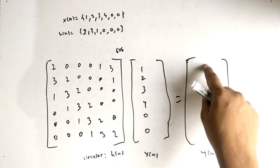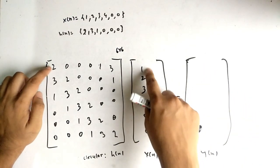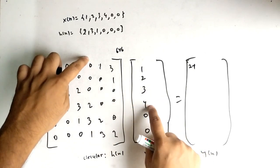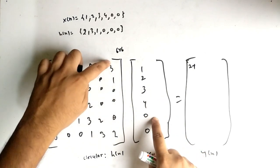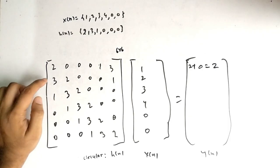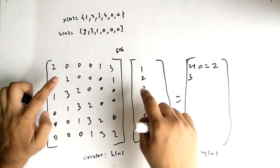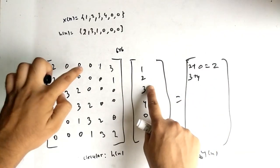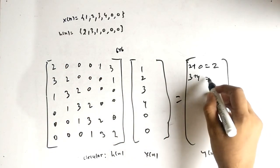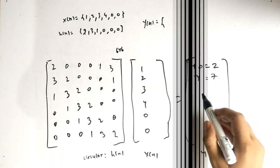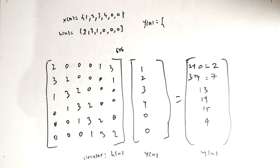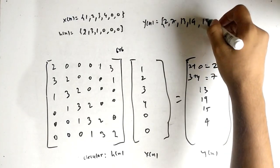Now we multiply the two matrices. For the first value: 2×1 + 0×2 + 0×3 + 0×4 + 1×0 + 3×0 = 2. For the second value: 3×1 + 2×2 + 0×3 + 0×4 + 0×0 + 1×0 = 3+4 = 7. Similarly filling the rest, the final value of y(n) is [2, 7, 13, 19, 15, 4].